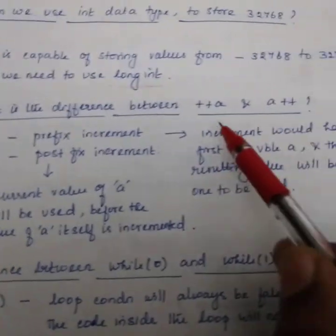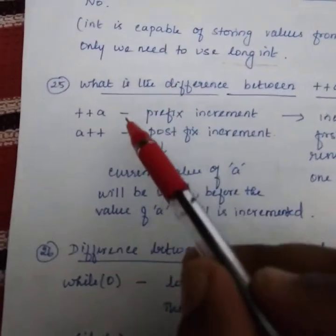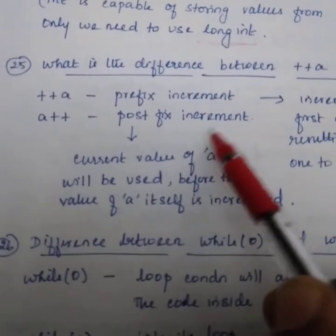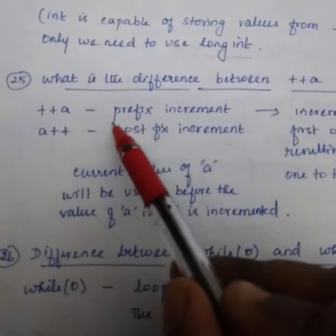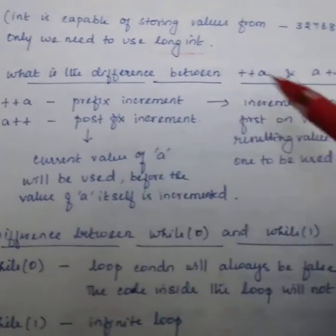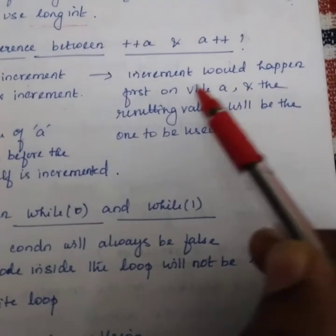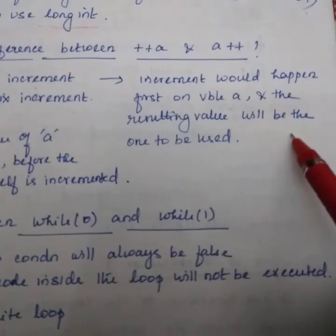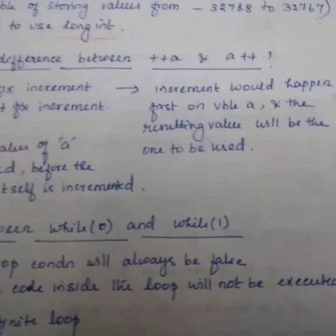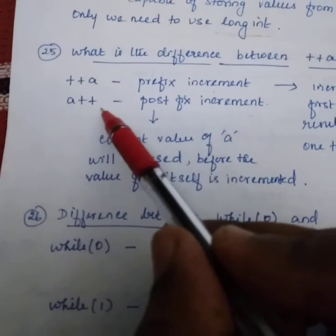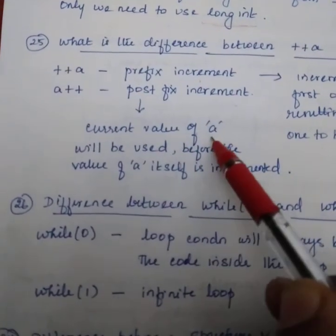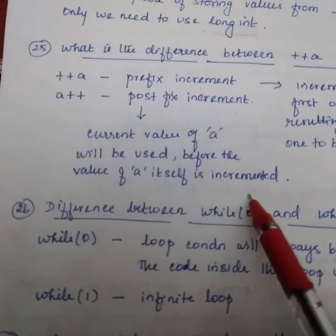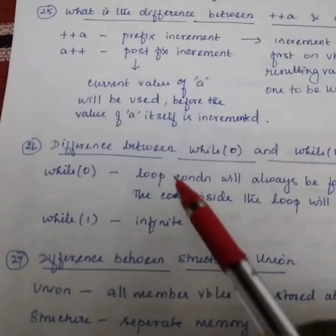What is the difference between ++a and a++? Very important question. ++a is prefix increment, a++ is postfix increment. Prefix increment means increment would happen first on the variable a. Then the resulting value will be the one to be used. But in a++, the current value of a will be used before the value of a itself gets incremented.